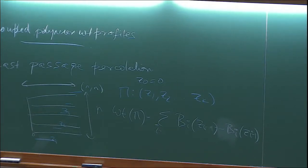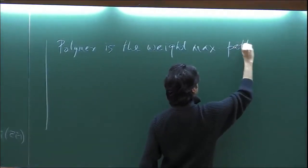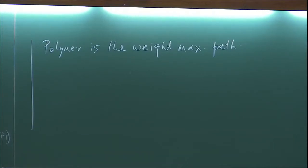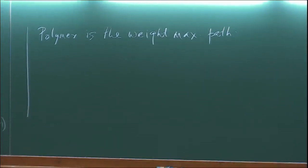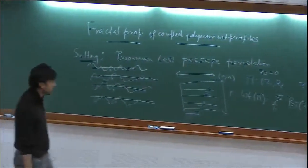The polymer, not surprisingly, is defined as follows: given any sequence Z_i, you have a weight associated to it. You then look at all possible sequences Z_i and take the one which maximizes the weight. Such a maximizer exists by compactness, and it also turns out the polymer is actually unique — so for deterministic fixed endpoints, it's unique, although there may be random points where multiple polymers exist.